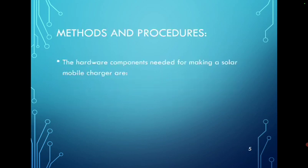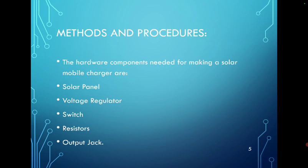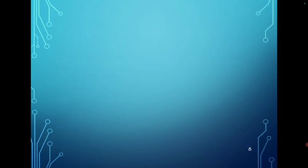First, method and procedures. The hardware components needed for making a solar mobile charger are solar panel, voltage regulator, switch, resistors, and output jack. Output jack is the mobile phone.